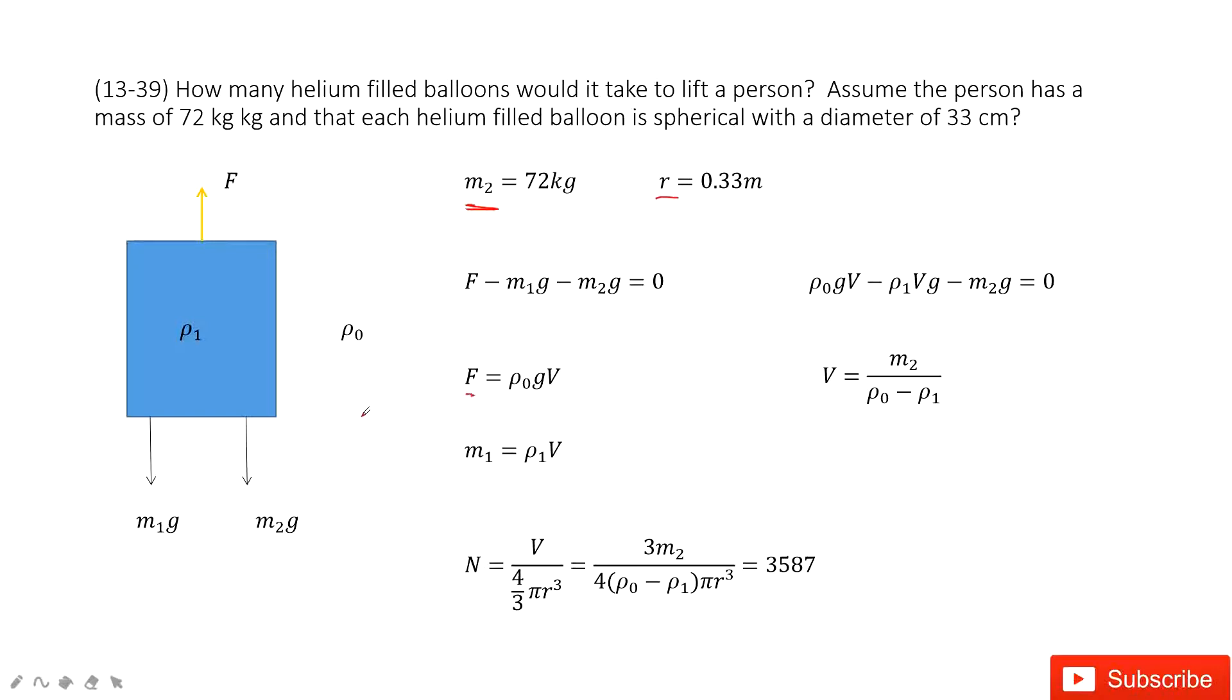Now we look at the buoyancy. Buoyancy is the gravity of the air replaced by this system, by this object. So it is rho0 times g times V.